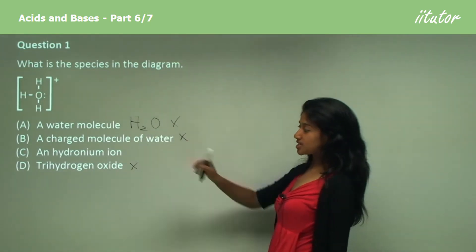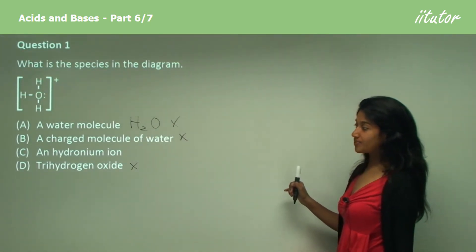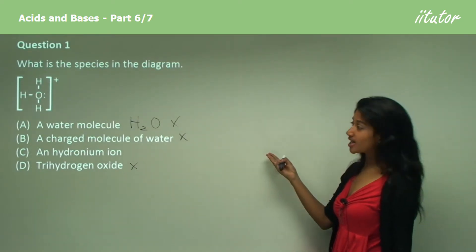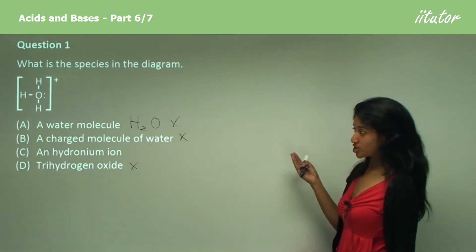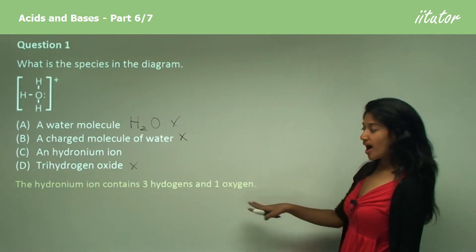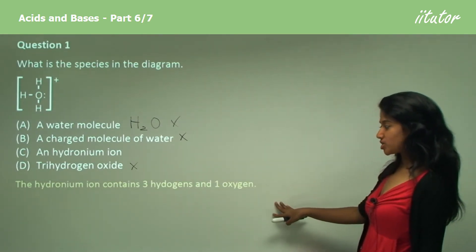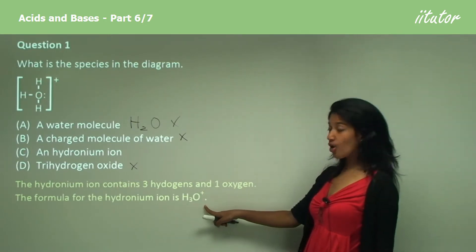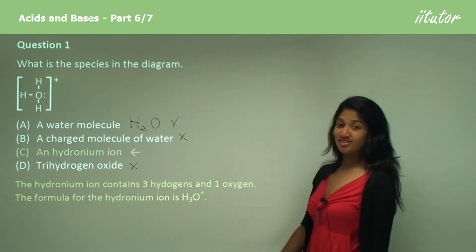And we have option C, a hydronium ion. It is a hydronium ion because it does have three hydrogen atoms and one oxygen atom, because the hydronium ion contains three hydrogens and one oxygen. The formula is H3O+, and it's C.